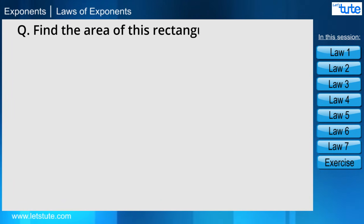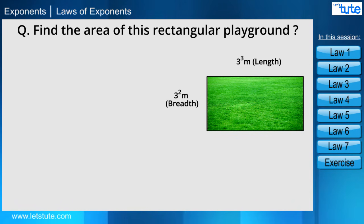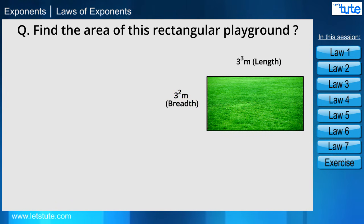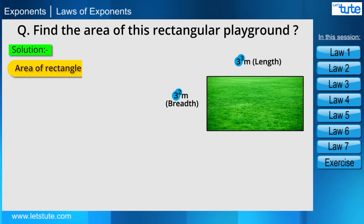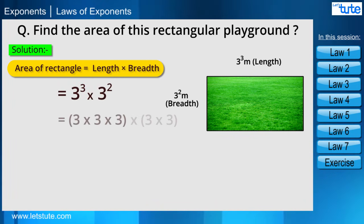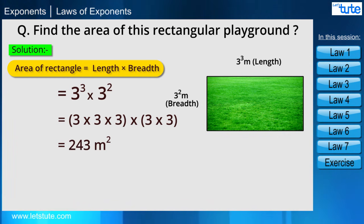Now let's look at this question: find the area of this rectangular playground. The length is given as 3 raised to the power 3 meters, and the breadth as 3 raised to the power 2 meters. The length and breadth are given in exponent form, so the area is length into breadth.